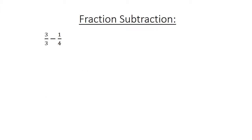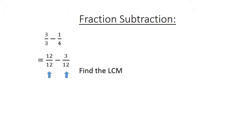Fraction subtraction. Three over three minus one over four equals. Find the lowest common multiple. Twelve over twelve minus three over twelve equals nine over twelve. Simplify: three over four.